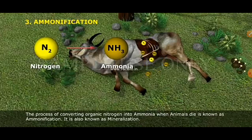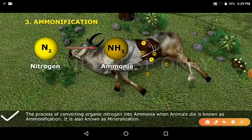The process of converting organic nitrogen into ammonia when animals and plants die is known as ammonification. Alternatively: the process of conversion of complex organic compounds like protein into ammonia is called ammonification. Ammonification is also called mineralization, because dead plants and animals are decomposed and their remains mix into the soil as minerals, which plant roots then absorb.